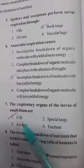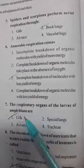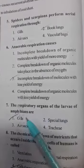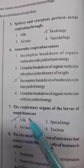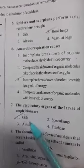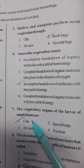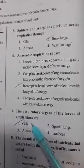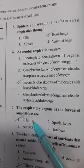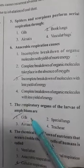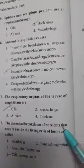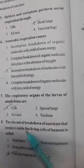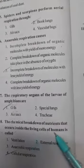The respiratory organs of larvae of amphibians are gills. Gills are also called branchia. Respiration through gills is called branchial respiration, gill respiration, or aquatic respiration.